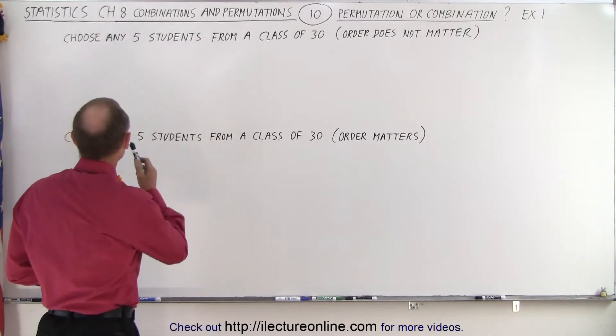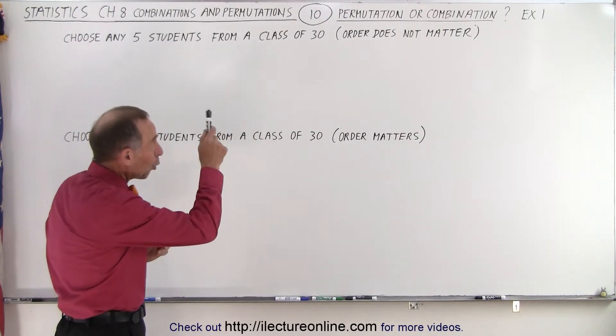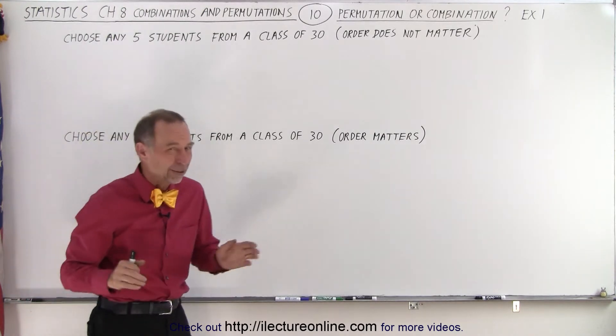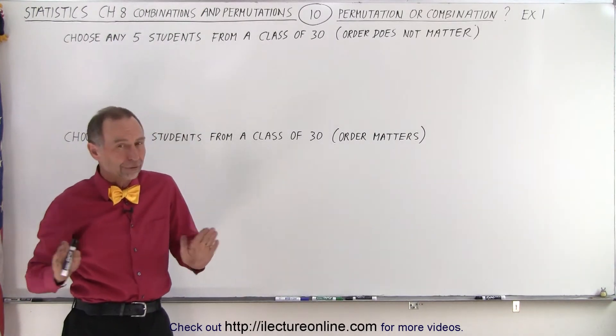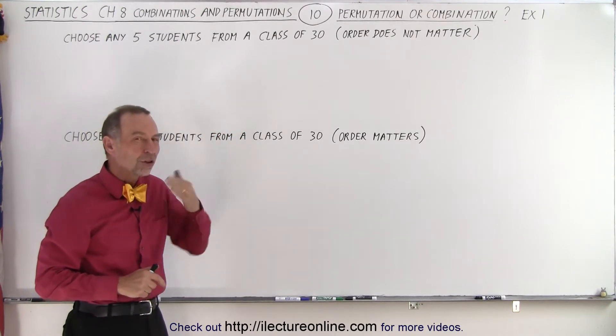It tells us to choose any five students from a class of 30. Now they tell us up there order does not matter and here the same thing, order matters. So there they make it very clear, very plain, that on the first attempt here, since order doesn't matter, we're looking for permutations.